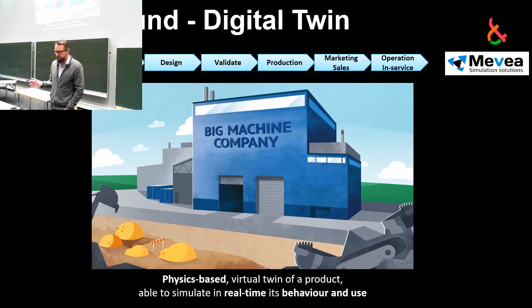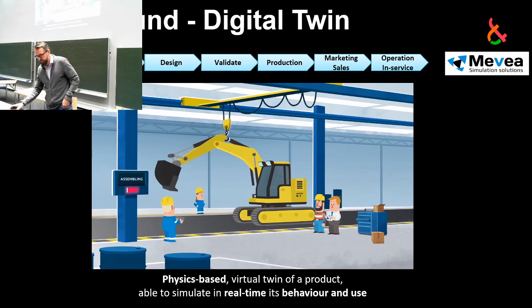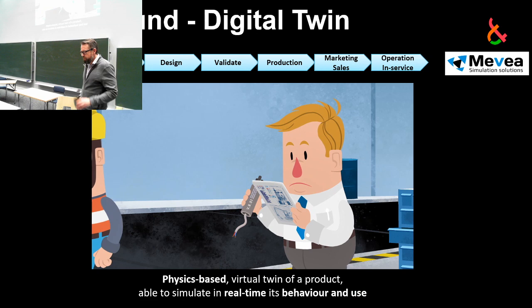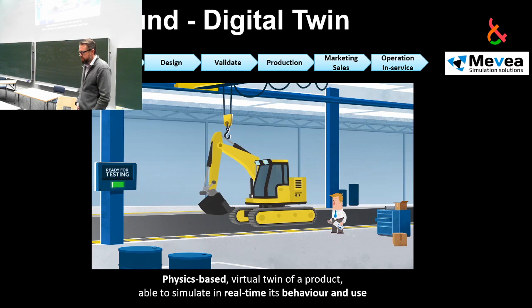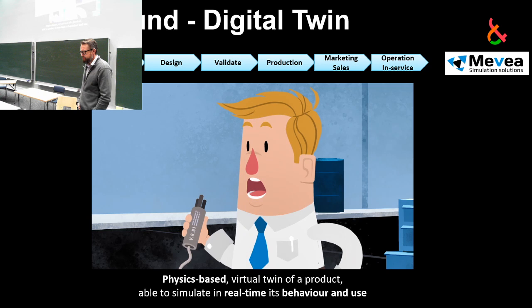Let's look at a video about the digital twin. Manufacturing machines can be complex and costly. Assembling the first prototype from parts that haven't been developed or tested together will often cause problems, and getting everything to function properly may require significant amounts of materials and effort.